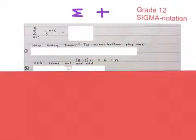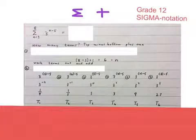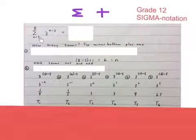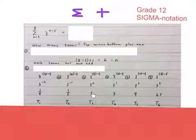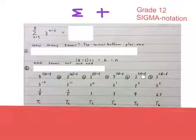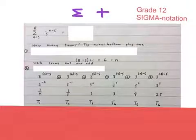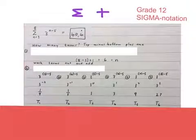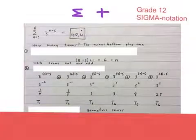Next we work out the terms. We take 3, plug it in and get the answer. Take 4, substitute it in and get the answer. Take 5, substitute it in and get the answer. Do the same with 6, 7, and up to 8. Then we can use a calculator and add up all these terms to get 40.4 recurring. But we won't use that method.